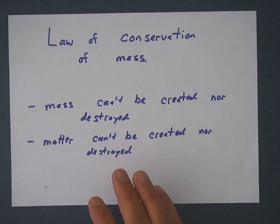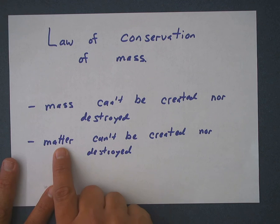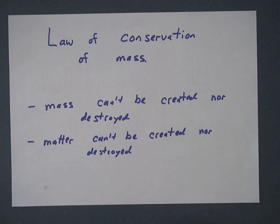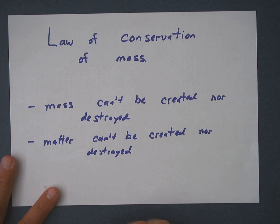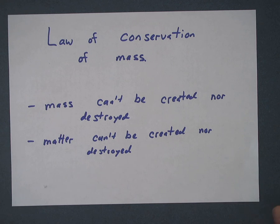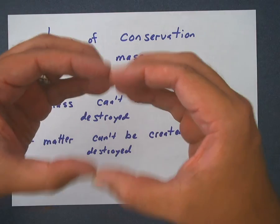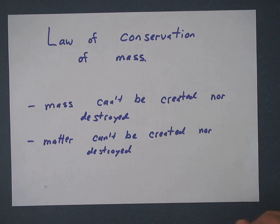You might think: don't one cell turn into two cells that turn into four cells? That's not creating matter — that's creating cells. But the matter that makes those cells came from other forms of matter. Atoms can't be destroyed. Atoms can't be created. Mommy atom and daddy atom don't have a little baby atom. An atom doesn't grow and grow and then split into two atoms. Cells do that, but atoms don't.